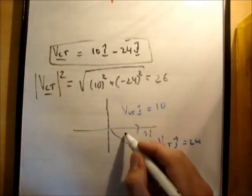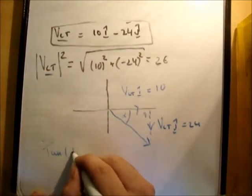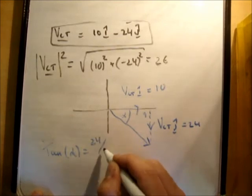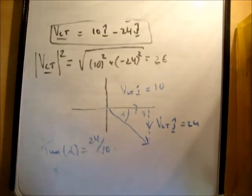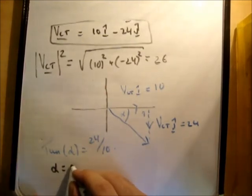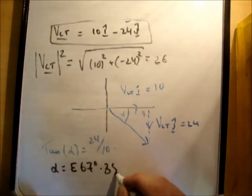So in order to get, we'll say alpha here, we'll say tan alpha. Tan alpha is equal to 24 over 10. Therefore alpha is equal to inverse tan of 24 over 10. Alpha turns out of course to be 67 degrees 38 seconds.